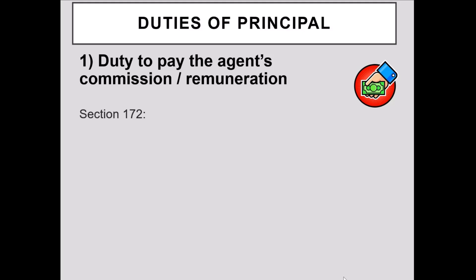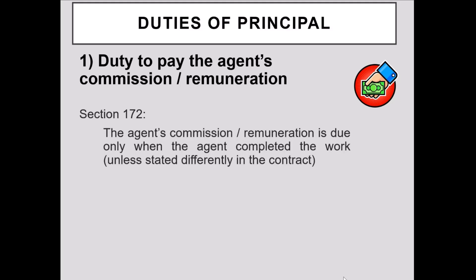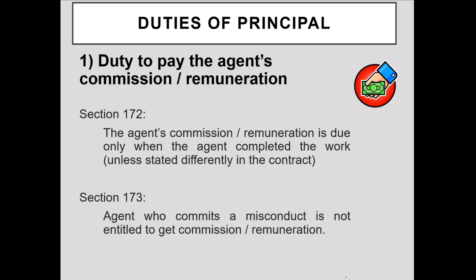However, in the absence of such a provision, Section 172 provides that the agent's commission or remuneration must be paid by the principal when the agent has completed his work. However, according to Section 173, if the agent has committed any form of misconduct, the agent is not entitled to get the commission or remuneration.